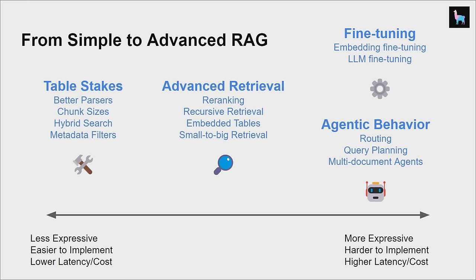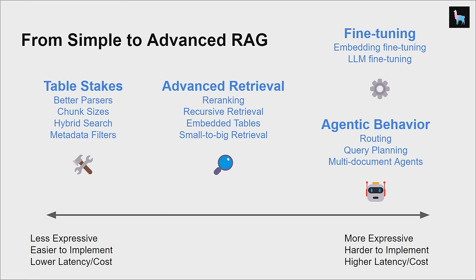The last bit gets into more expressive stuff that might be harder to implement and may incur higher latency and cost, but is potentially more powerful. Looking forward, there are agents — how do you incorporate agents towards better RAG pipelines to better answer different types of questions and synthesize information? And how do you actually fine-tune things?